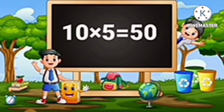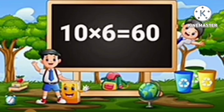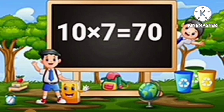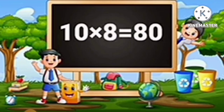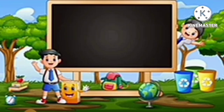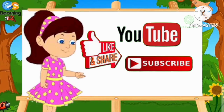Table of 10: 10 fives are 50, 10 sixes are 60, 10 sevens are 70, 10 eights are 80, 10 nines are 90, 10 tens are 100. Thank you for watching our video. If you liked the video, please like and subscribe.